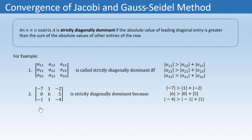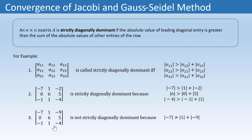For example, this matrix is strictly diagonally dominant because: |−7| is greater than |1| + |−2|, |6| is greater than |0| + |4|, and |−4| is greater than |−1| + |1|. Whereas this second matrix is not strictly diagonally dominant because |−7| is not greater than |1| + |−9|.